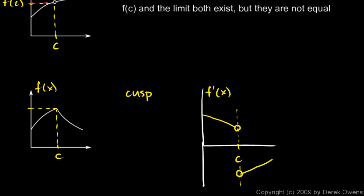A cusp is a point where the function is continuous, but the derivative of the function is discontinuous.